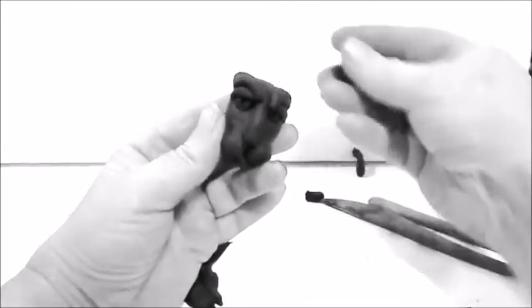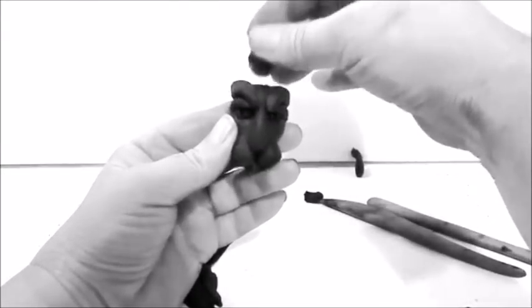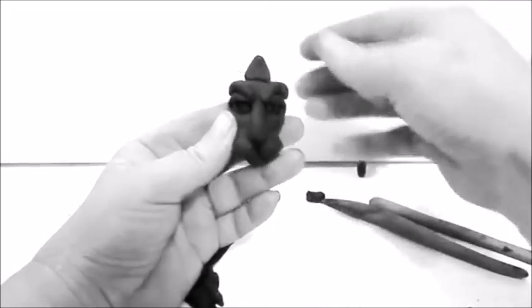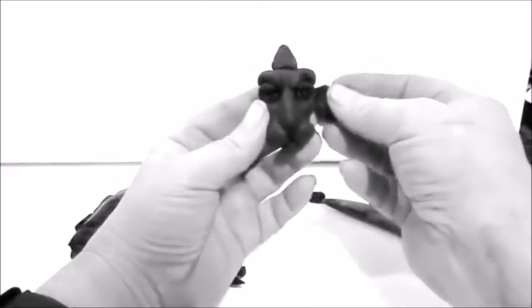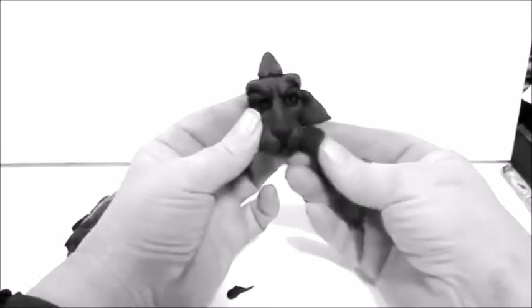Almost there now. So take a little bit of clay here and just put it in here, just a tuft of it. That's going to be for the beginning of his mane. And then we just add clay around the outside for his mane coming down.